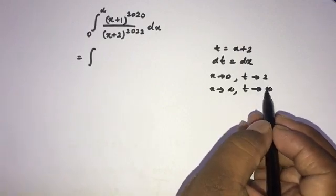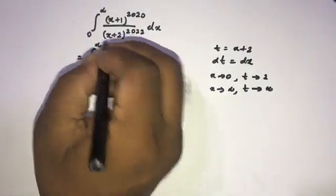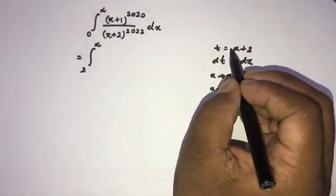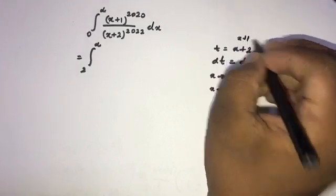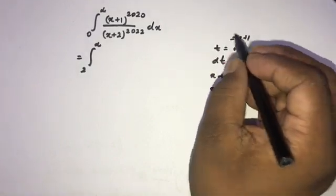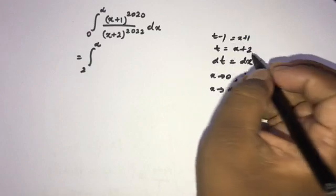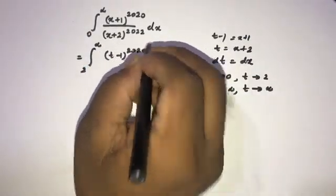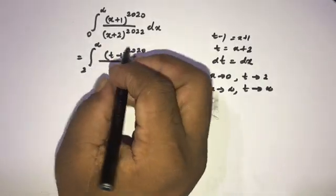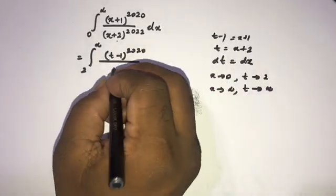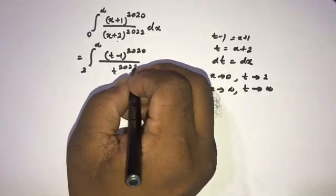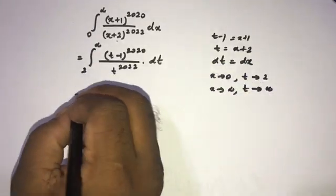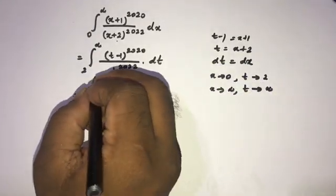We can now substitute. The new limits are 2 to infinity. Since x + 2 = t, we have x + 1 = t - 1. So we can write (t-1)^2020 over (x+2)^2022, which is t^2022, and dx = dt.